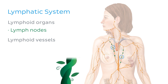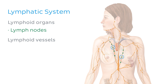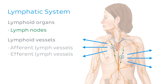They are bean-shaped structures and each have at least one afferent vessel and one efferent vessel connecting it to the rest of the system. Vessels that carry lymph to a lymph node are called afferent lymph vessels, and those that carry lymph away from a lymph node are called efferent lymph vessels.